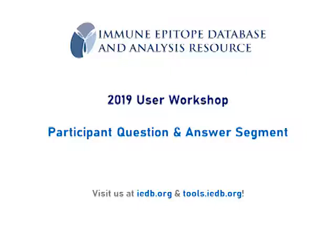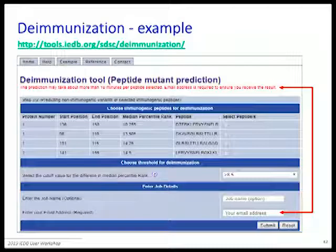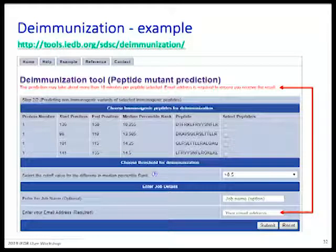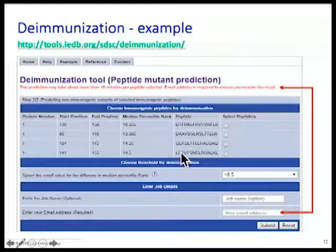Q: Would you first check if there is a cluster of epitopes and then run the de-immunization tool? A: Yes, you would see it in the tool. The tool will say that for this particular protein there are four different potential peptides with promiscuous binding that are at risk of being immunogenic. And you see that positions 96 and 101 are the same peptide overlapping by 10.